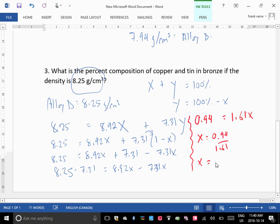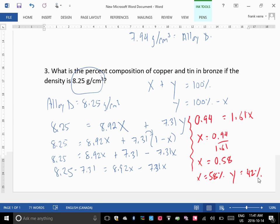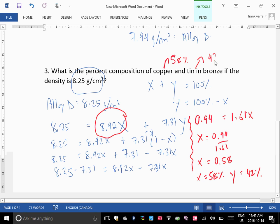0.58. So in other words, X is 58%, therefore Y has to be 42%. Okay, so now we have our composition for X and Y. Now, X was what? X was copper or tin? X was copper. So we now know our alloy was 58% copper and 42% tin.